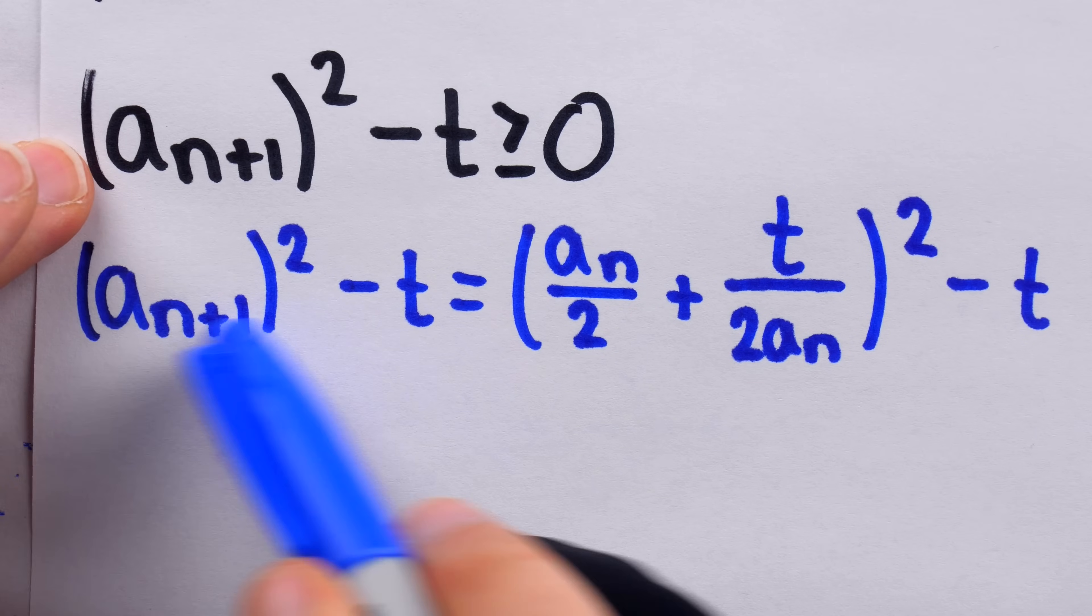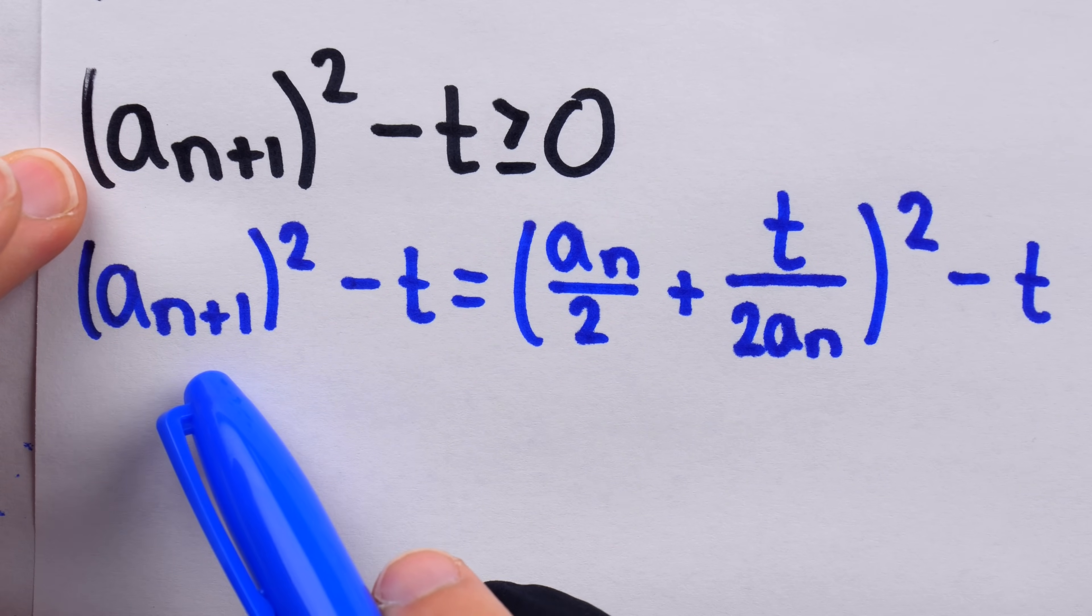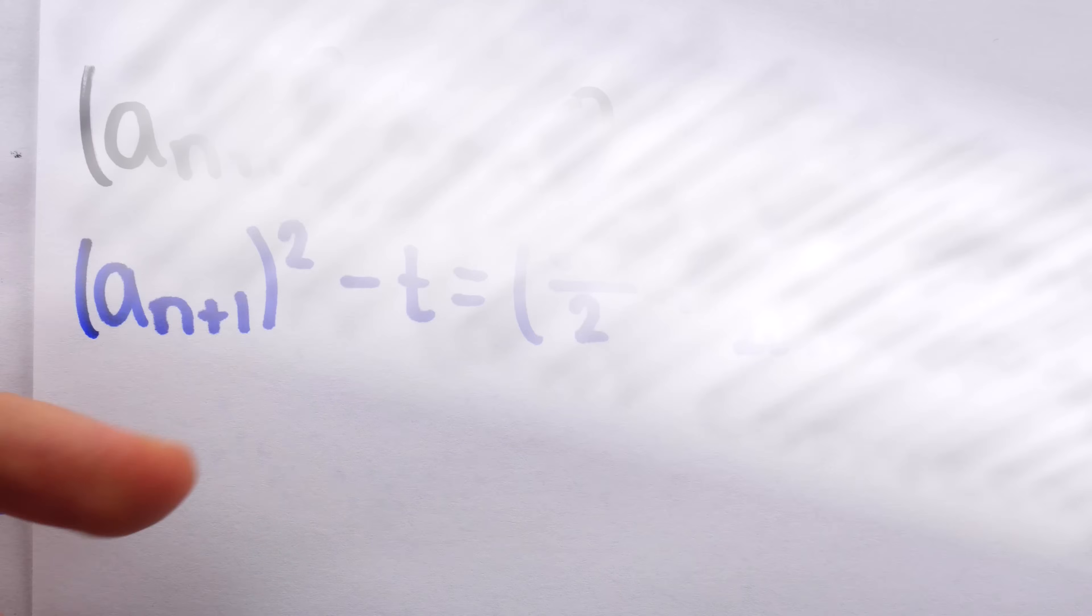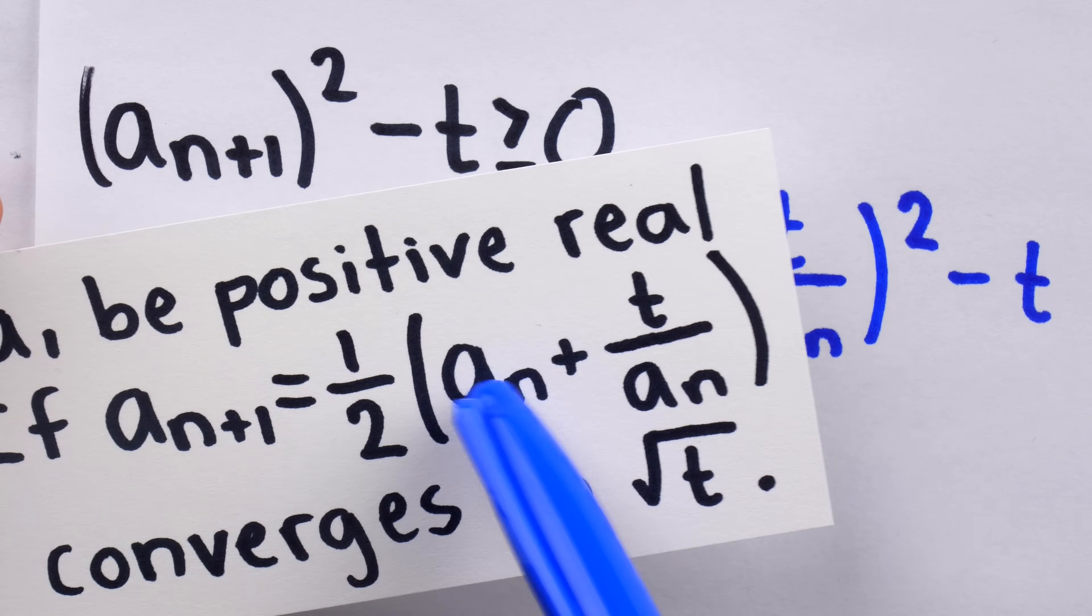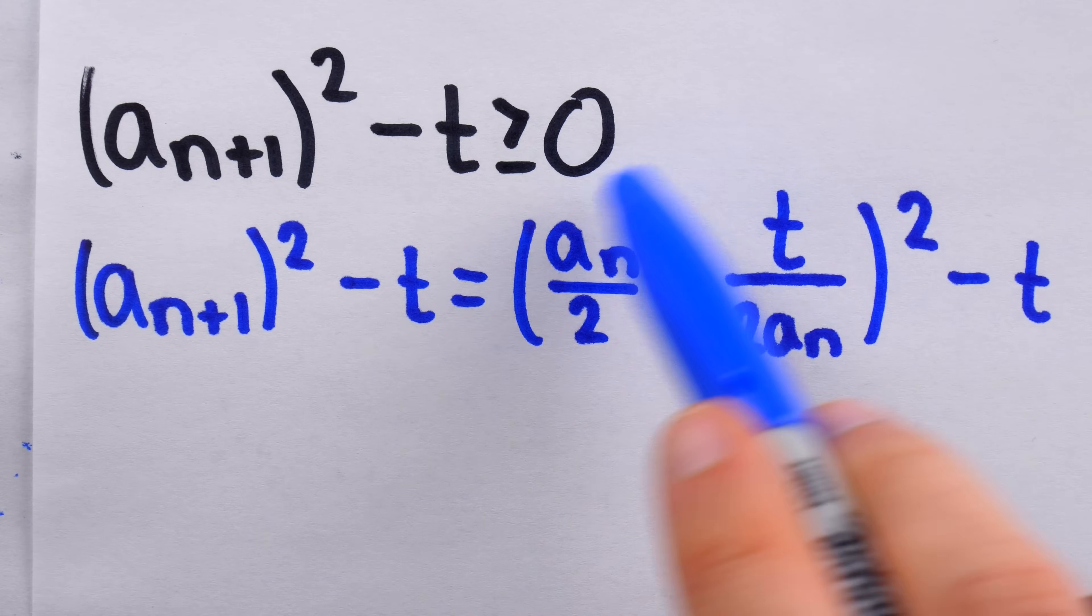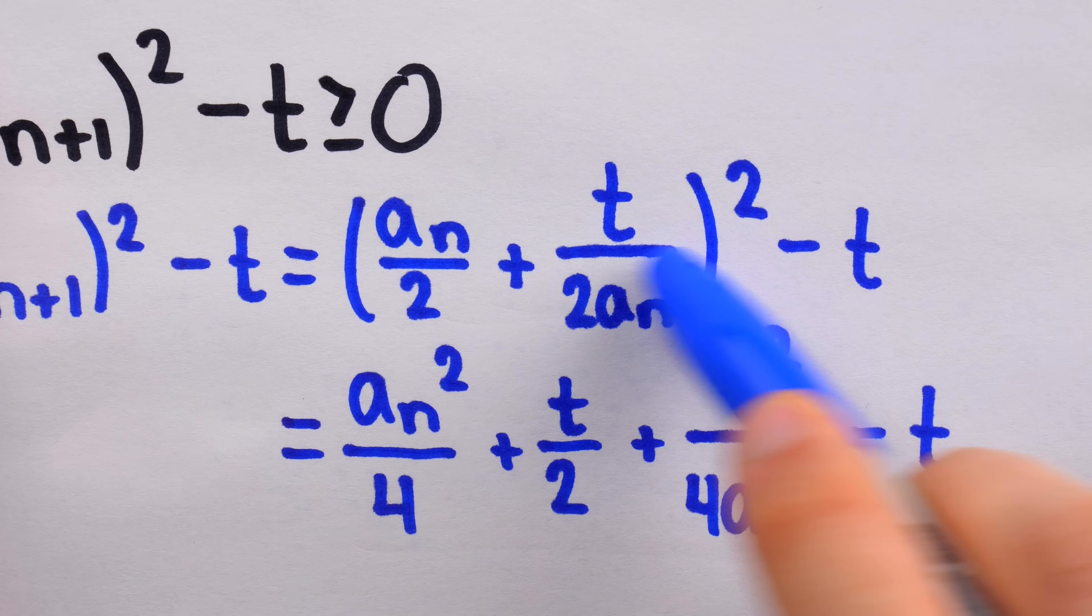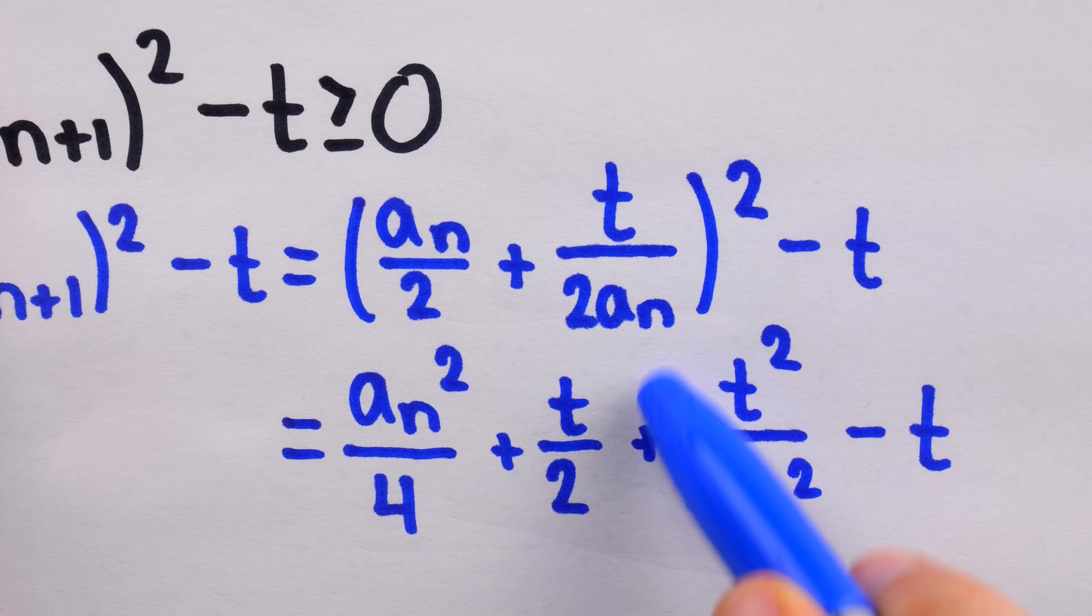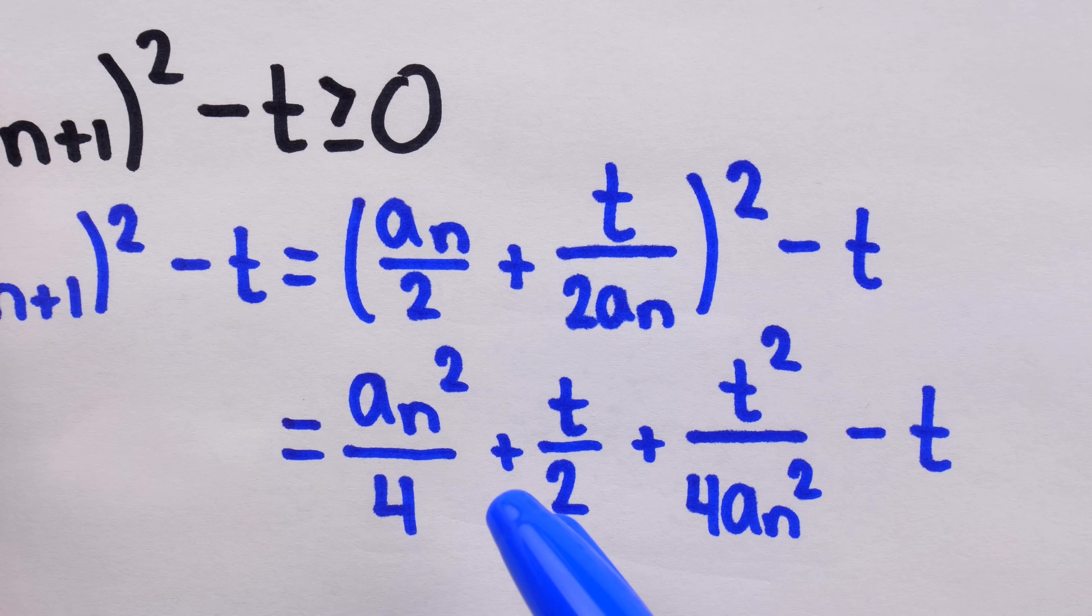So, we'll work with this difference. First things first, we can rewrite a n plus 1, like this, by our recursion. Remember, a n plus 1 is equal to 1 half times this. So, just distribute that 1 half. That's how we get this. Actually, squaring this binomial gives us this. And now, we can subtract t from t over 2 to get negative t over 2.